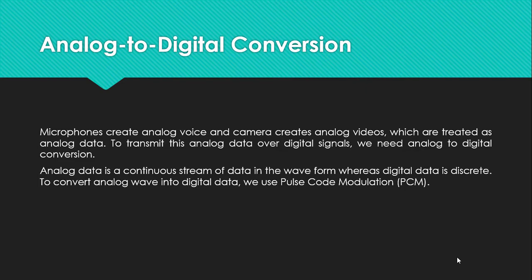Analog data is a continuous stream of data in the waveform, whereas digital data is discrete. To convert analog wave into digital data, we use Pulse Code Modulation, or PCM.